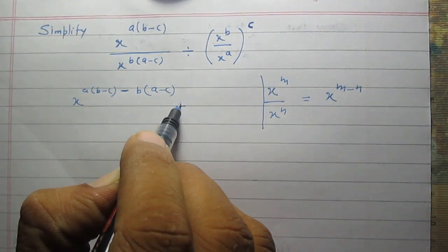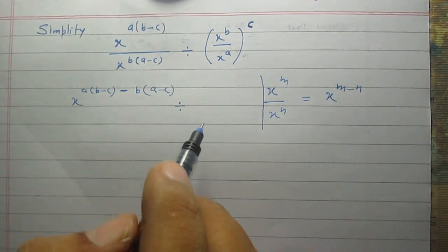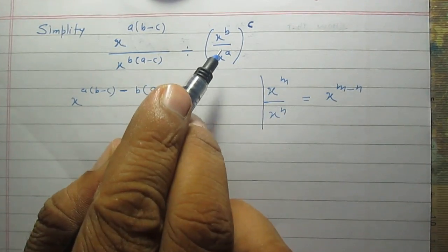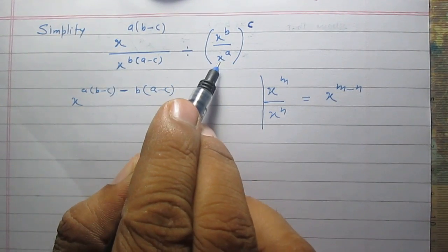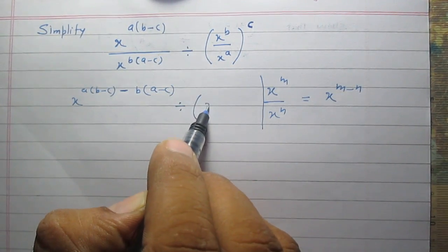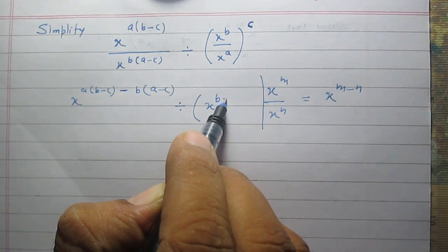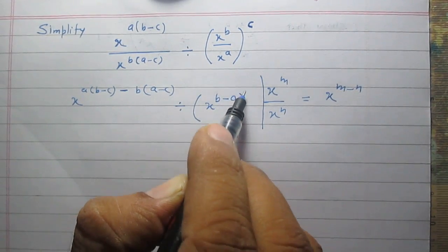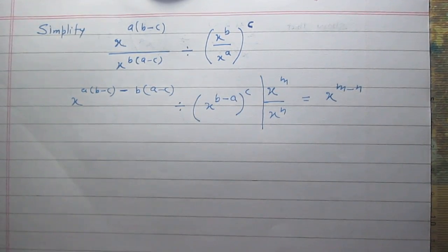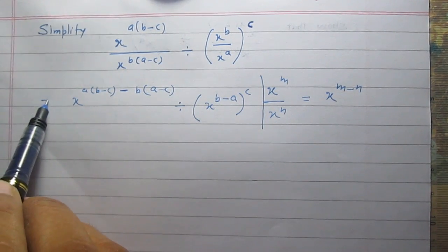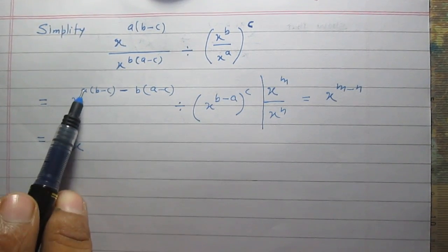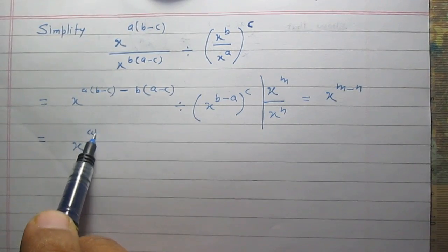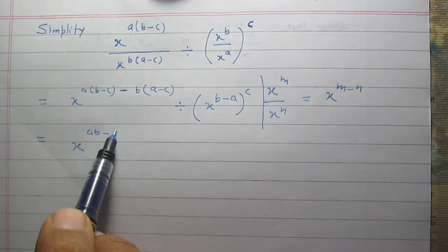Now, division sign. A similar rule can be applied in the second part. Inside the bracket, the quantity x raised to the power b upon x raised to the power a·b can be written as x raised to the power b minus a, then whole raised to the power c. We can further simplify it as x raised to the power ab minus ac.